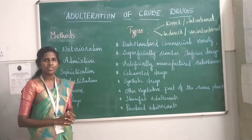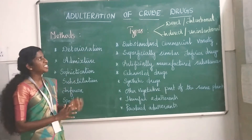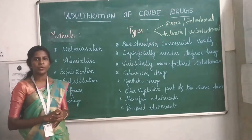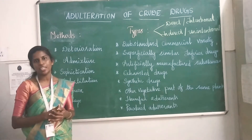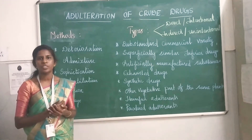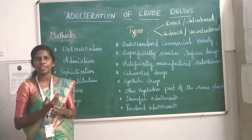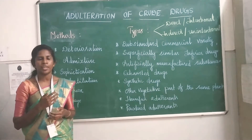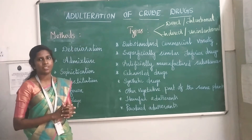Good morning everyone. Today we are going to see about the adulteration of crude drugs. First we will see what is meant by crude drug. Crude drug is nothing but the drugs we are deriving from natural sources in raw form — from plant source, animal source, mineral source, or from marine sources.